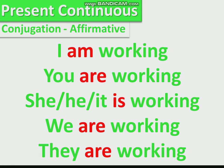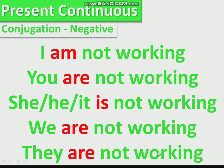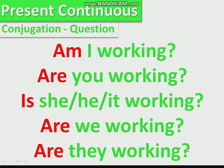Present continuous conjugation — affirmative: I am working, you are working, she/he/it is working, we are working, they are working. Negative: I am not working, you are not working, she/he/it isn't working, we are not working, they are not working. Questions: Am I working? Are you working? Is he/she/it working? Are we working? Are they working?